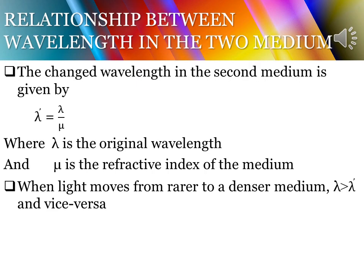To summarize: speed and wavelength change during refraction, but frequency remains constant because there is no change in the source. If light travels from one medium to another, the changed wavelength λ' is given by λ' = λ / μ, where λ is the original wavelength and μ is the refractive index of the medium. When light moves from a rarer to a denser medium, the original wavelength is more than the changed wavelength, and vice versa.